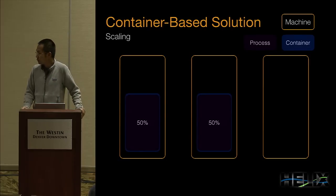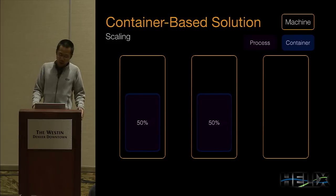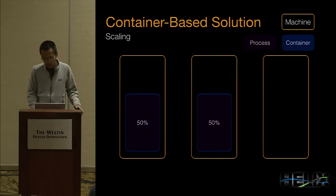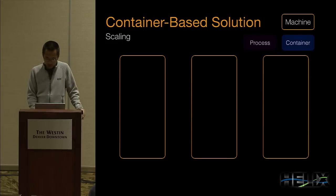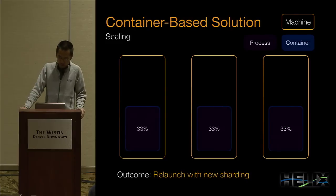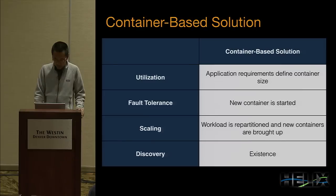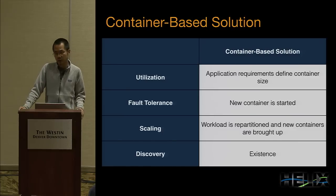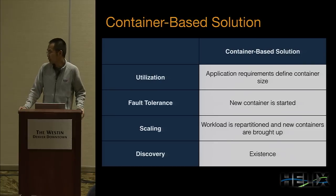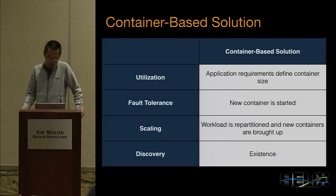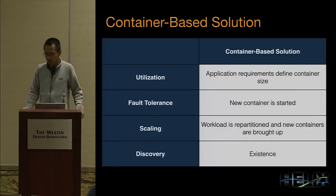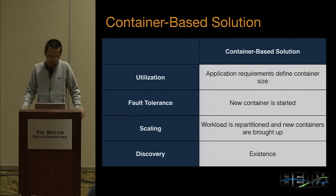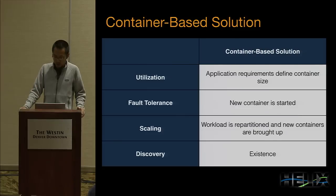To deal with scaling, workload may grow and we need to add new machines to the cluster, allocate new containers, and scale to the workload. When we add a new machine, we repartition the workload: shut down containers and allocate new ones, each taking one-third of the new sharding. In summary for the container-based solution: applications must specify resource requirements up front, fault tolerance mainly involves starting new containers elsewhere, scaling requires repartitioning, and service discovery is limited to detecting the existence of a container with nothing more than that.